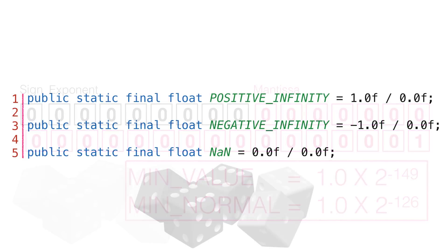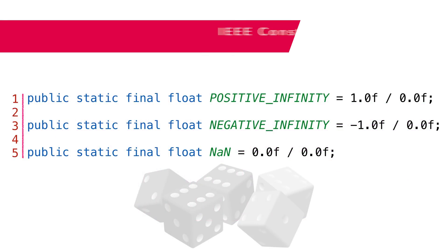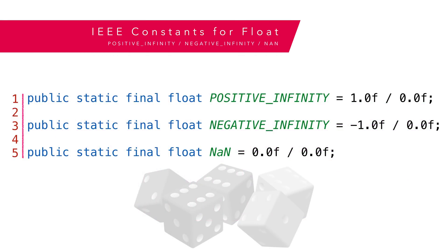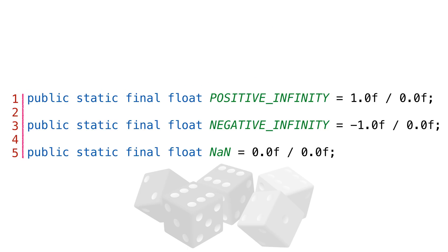The last three constants for the Float class are all about representing impossible numbers: positive infinity, negative infinity, and not a number (NaN). These constants are the IEEE representations for the float primitive and are returned by some trigonometric and logarithmic functions.